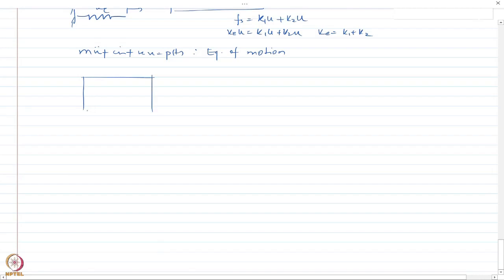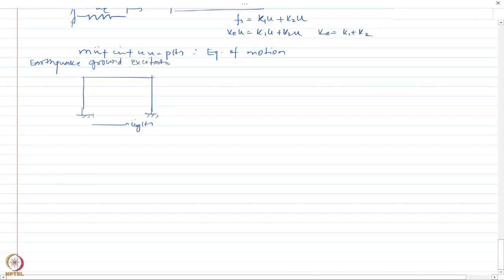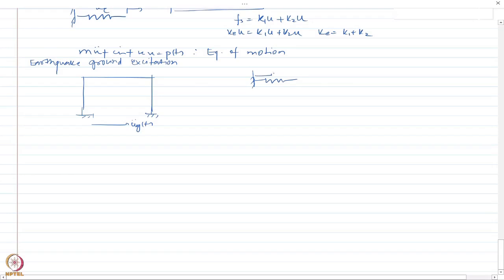I have this frame — or equivalently a spring-mass-damper representation — where the support is not a fixed support anymore but is undergoing ground acceleration u_g. Because of this there would be some displacement as well. The total displacement u_t of the mass has a component due to the ground movement and a component due to internal deformation of the structure.